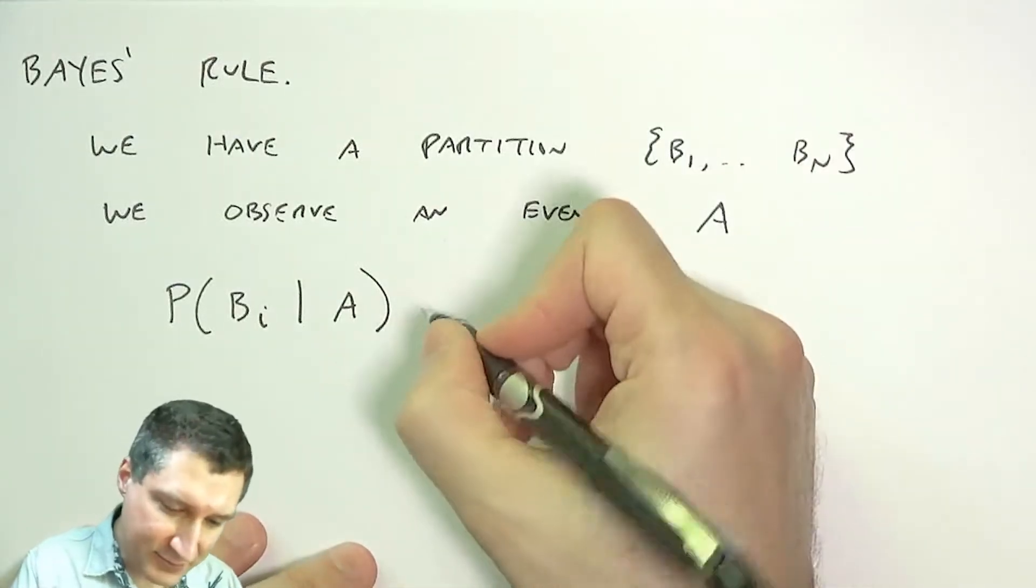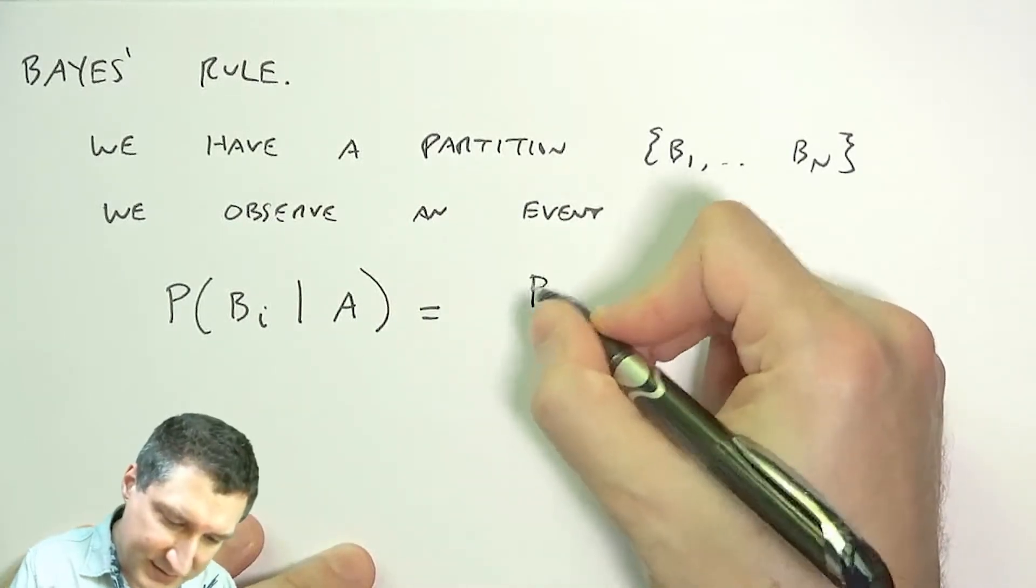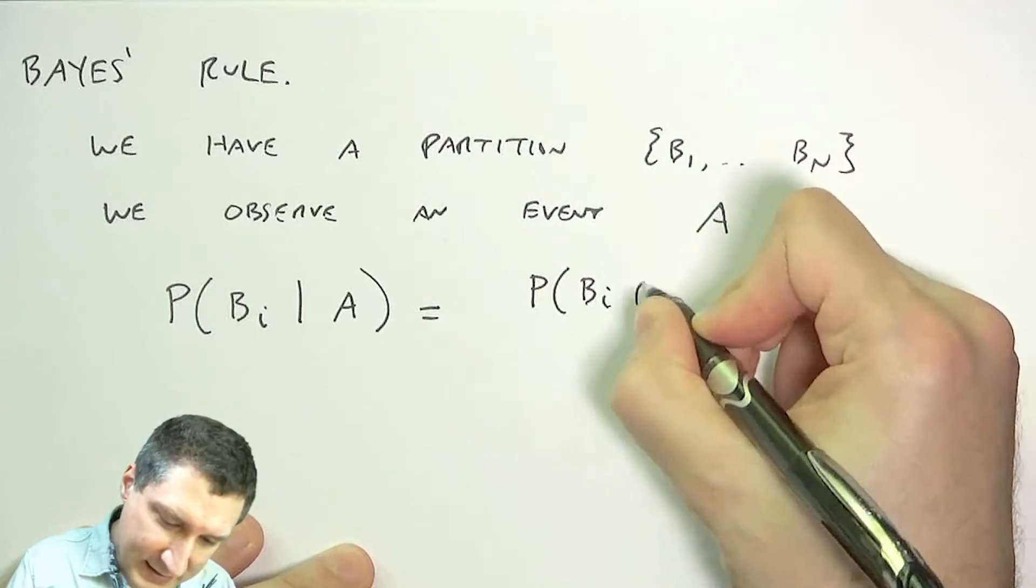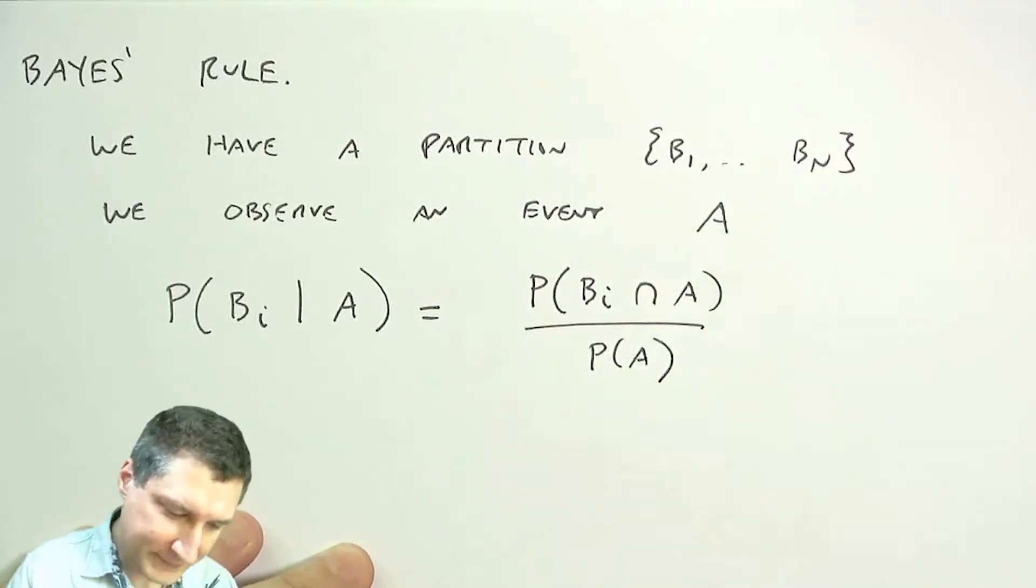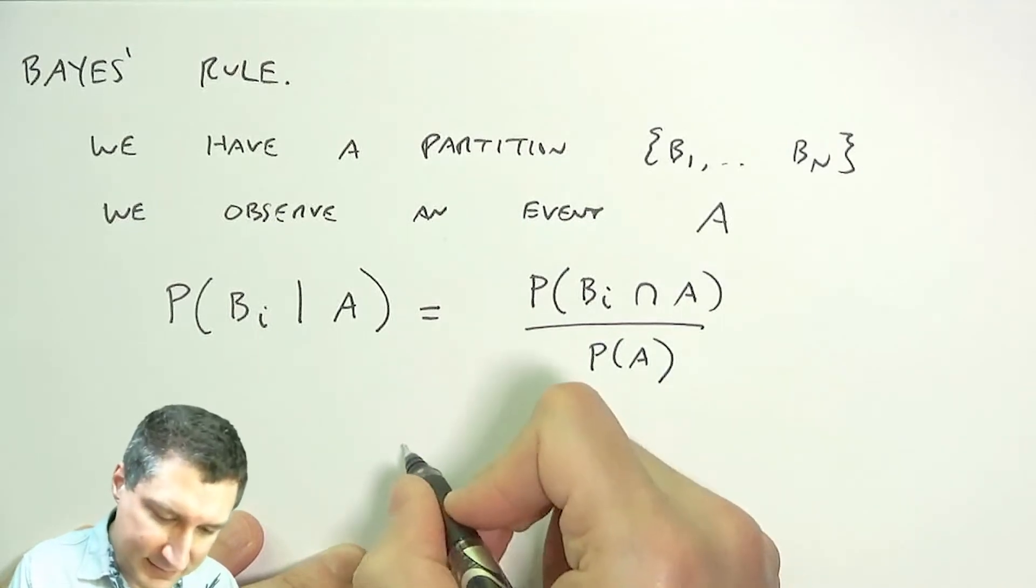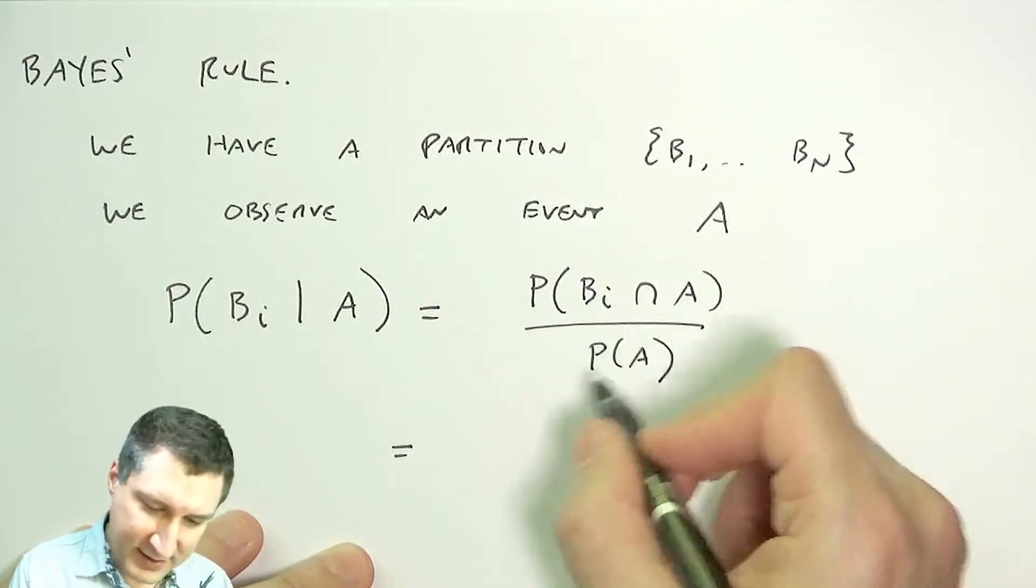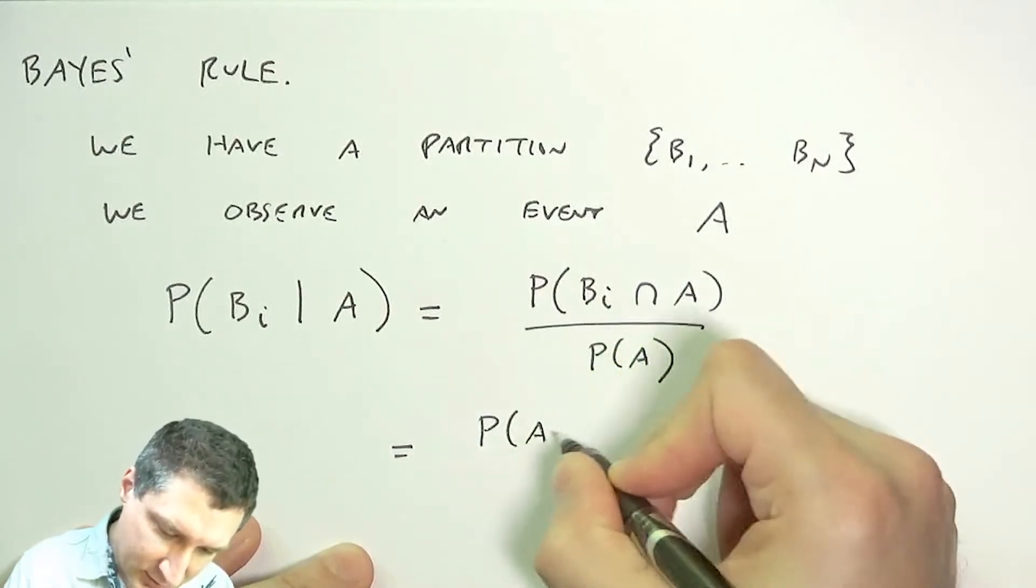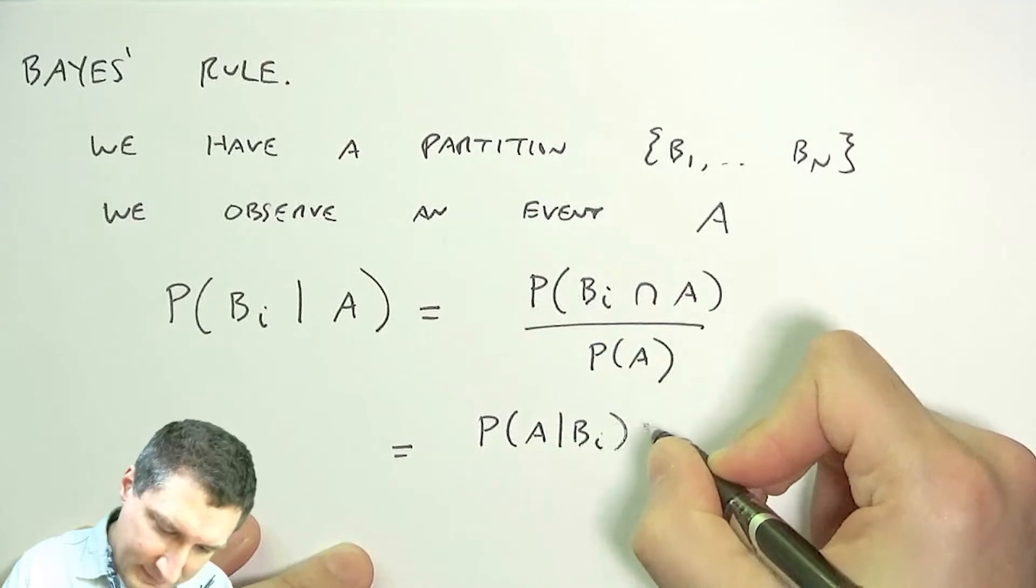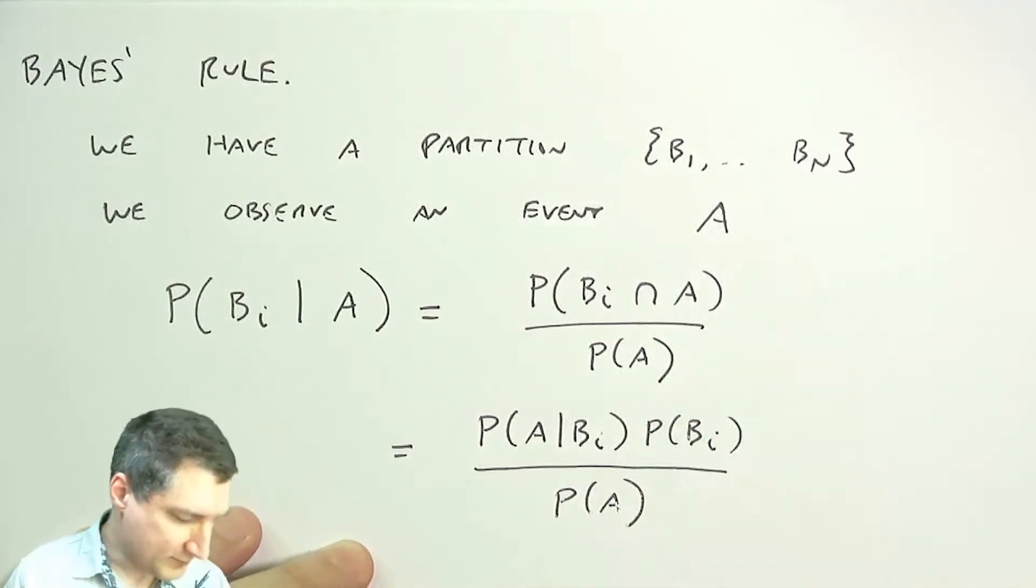Well, I can compute this value from what we already know. So this, by definition of conditional probability, is the probability of BI intersect A over the probability of A. And then we computed from before that the probability of this intersection is this conditional probability, like so.